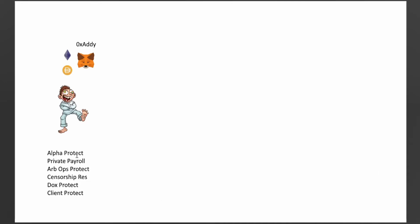First of all, there's alpha protection. Let's say Boosted Bill has some alpha and he wants to act on it, but he doesn't want other people to act on it immediately — maybe he wants to dollar cost average into that position. He can use this protocol to protect his alpha because people won't be able to see that he's buying that token, especially if he's an influencer.